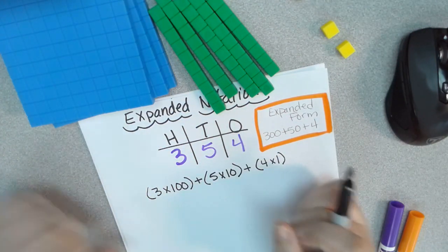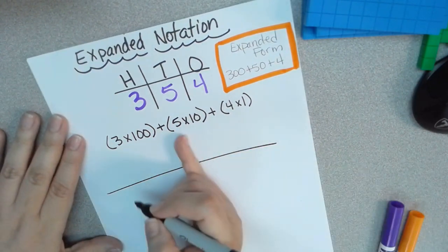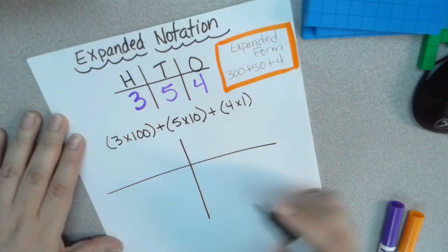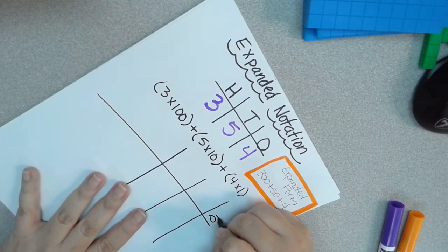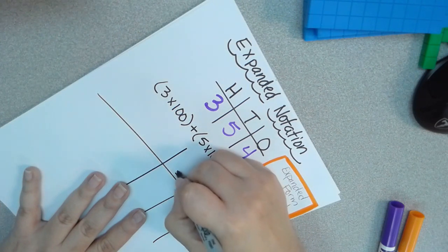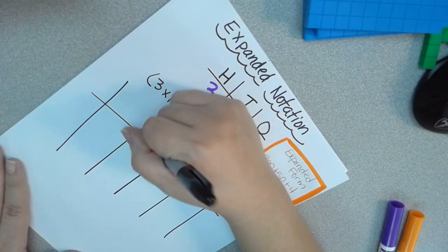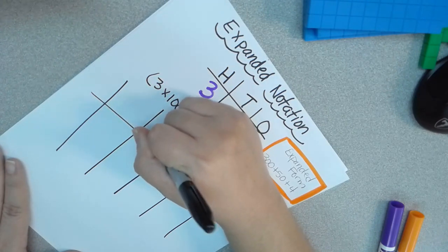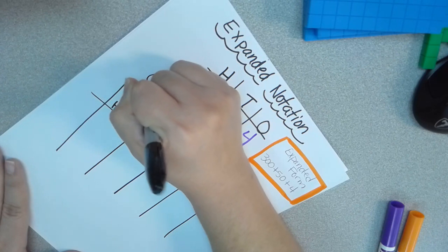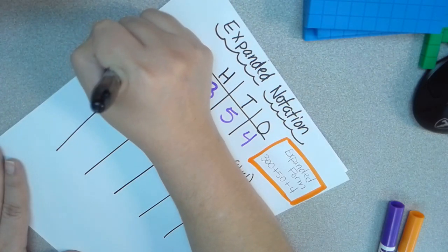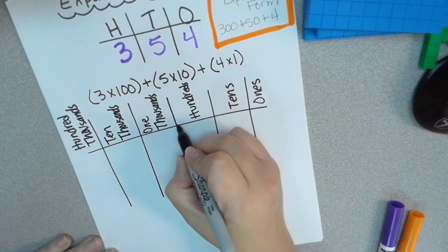Let's work with a bigger number. I'll do a quick place value chart. On this side we'll have our ones period and our thousands period. I'll write out: ones, tens, hundreds — and then one thousands place, ten thousands place, and hundred thousands place. Right in the middle you have your comma — don't forget that comma.